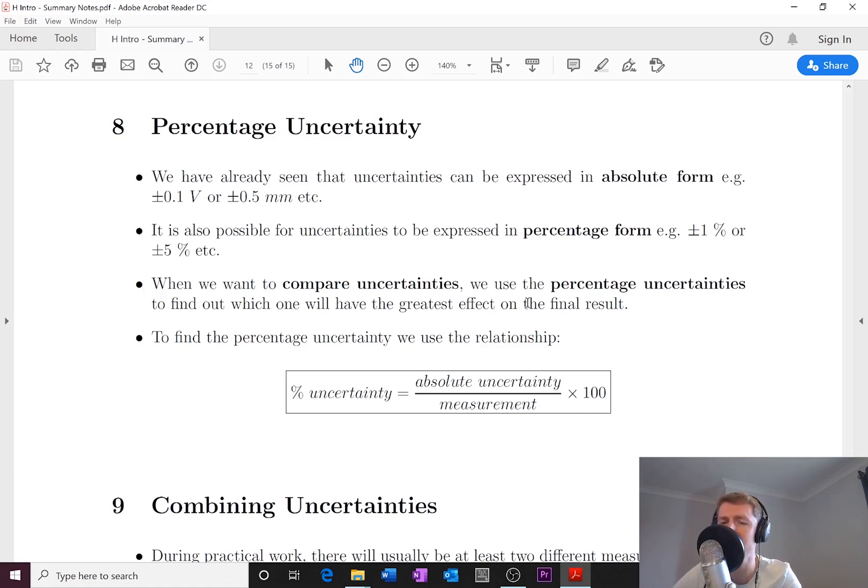However, I've got two uncertainties associated - one with my distance and one with my time. If I wanted to find out the total uncertainty in my speed, I'm gonna have to work out some overall combined uncertainty. That's what we're going to talk about later, but for now we're just looking at percentage uncertainties. We want to be able to compare uncertainties so that we know which one is having the biggest effect on our final result.